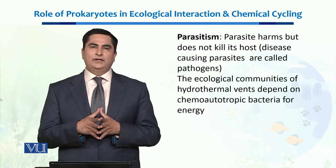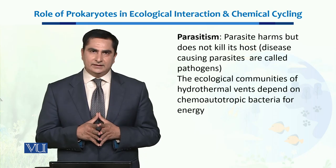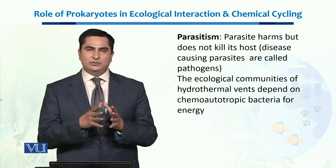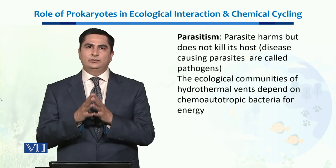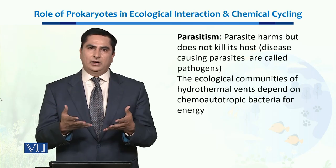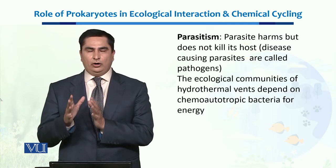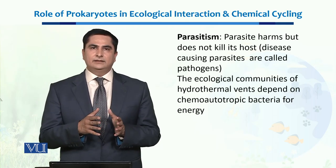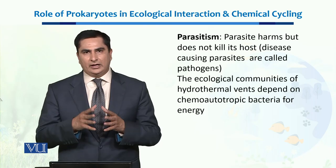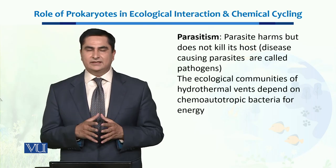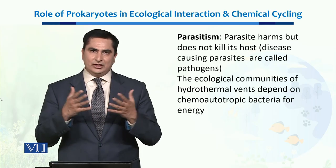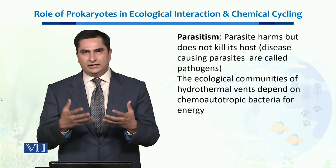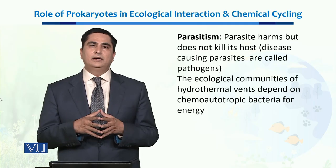Then we have the worst kind of relationship called parasitism. Parasitism is a symbiotic relationship in which one organism gets benefit while the other organism is harmed. The benefit one organism is getting is at the cost of the other organism. Prokaryotic parasites are involved in this kind of parasitism. Pathogens — human pathogens — are also a kind of parasite. They feed on the human body and in return cause different diseases and harm human bodies.